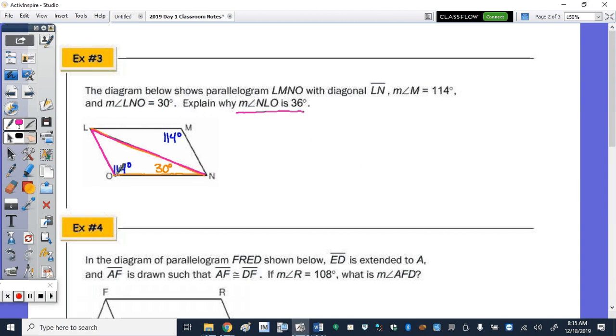Explain why the measure of NLO is 36. So NLO is...so they're telling me it's 36, and I need to explain why. Well, the first thing I'm going to do is go back to what I wrote in blue. And I first wrote that the measure of angle O was 114 degrees. So again, to explain, I like to bullet. So I state a computation, or I state a fact, and then back it up. So O, the measure of angle O was 114 degrees, because opposite angles of a parallelogram are congruent.